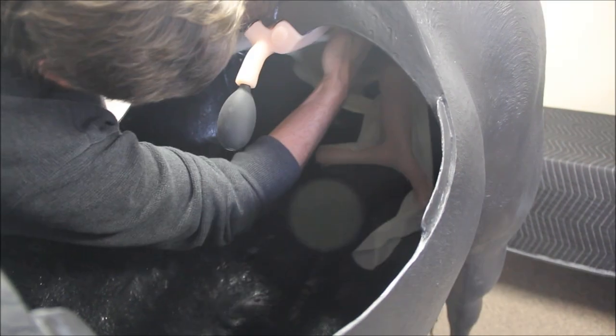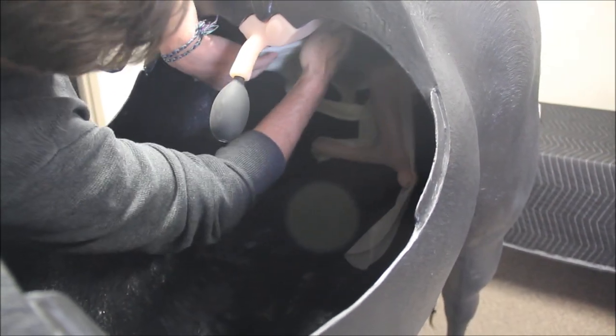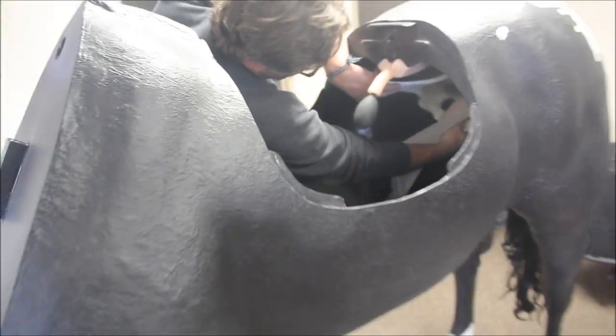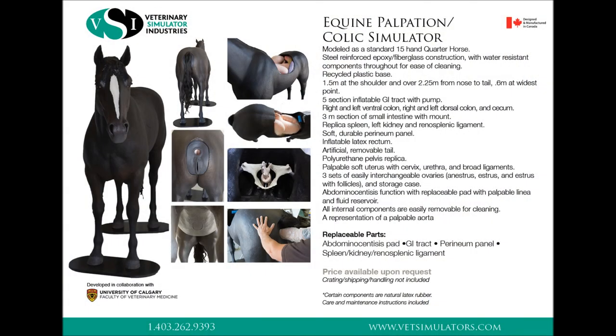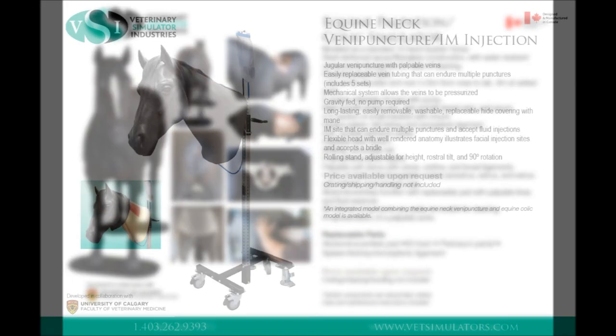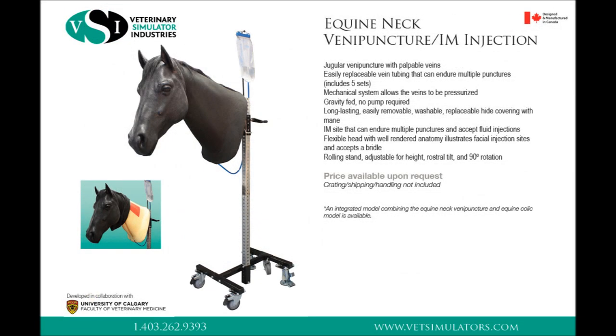The assembly of the equine palpation panel is the same in our full-sized VSI palpation colic simulator. It offers many other features including equine neck venipuncture with intramuscular injection pads, an open mouth for applying a bridle, spleen, kidney, palpable aorta, GI tract with small intestine, and abdominocentesis pad.